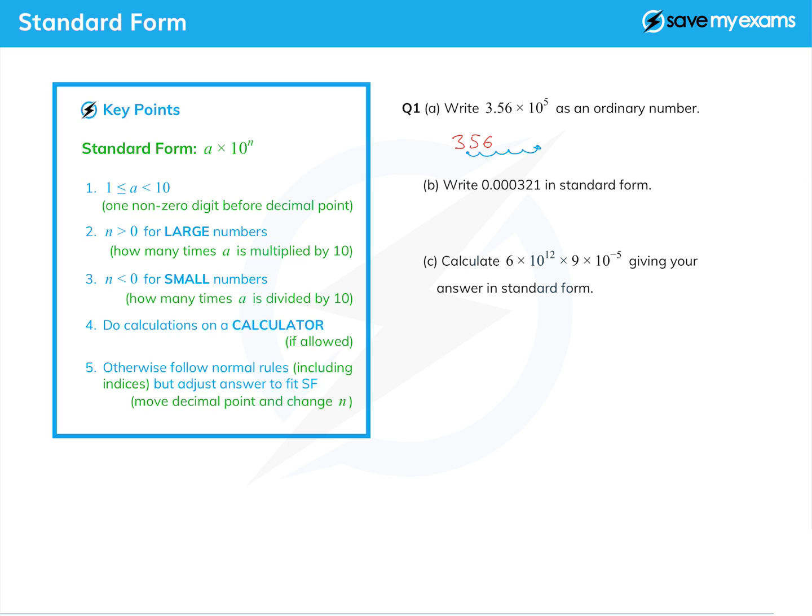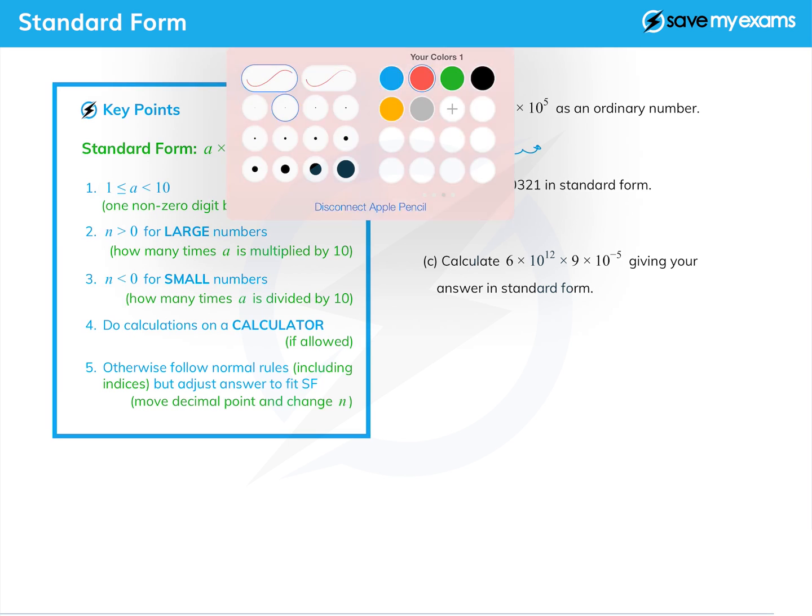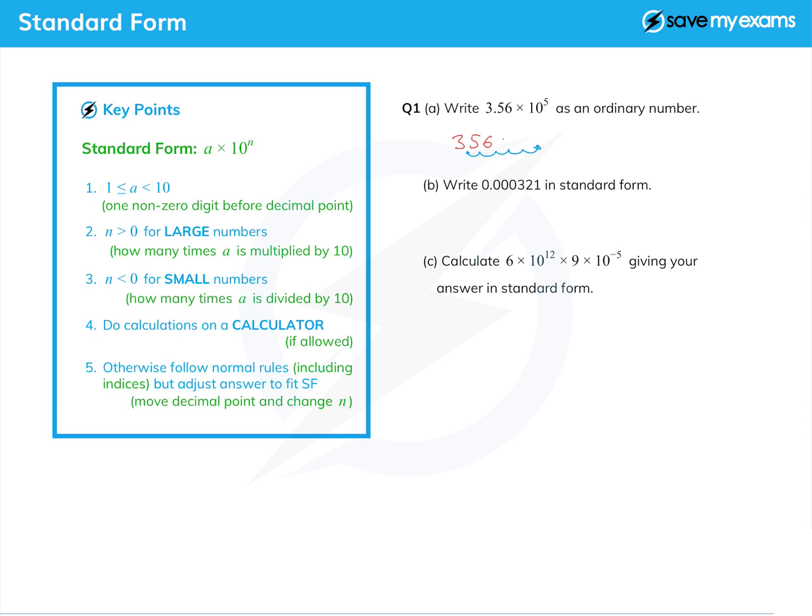Now there are some spaces there which we need to fill with zeros because we're multiplying by 10. There we go, we've filled all the spaces with zeros. So our answer is, just to make it absolutely clear without the arrows, 356,000, which I think you'll agree is a large number since n is greater than zero.